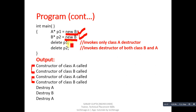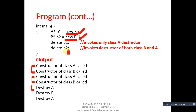When we call delete p1, it deletes the dynamically allocated memory. Since p1 is of base type, the compiler will only invoke the destructor of the base class, because the compiler works according to the type of pointer. For delete p2, since p2 is of derived class type, it calls the derived class destructor first, then the base class destructor. So delete p1 creates a problem — it does not call the destructor of the derived class.